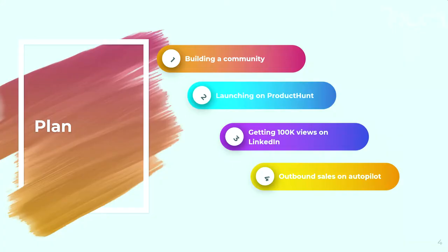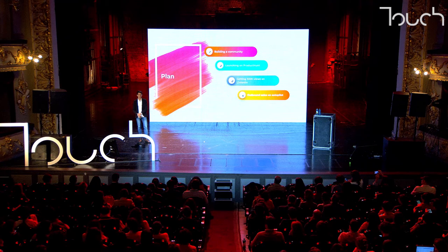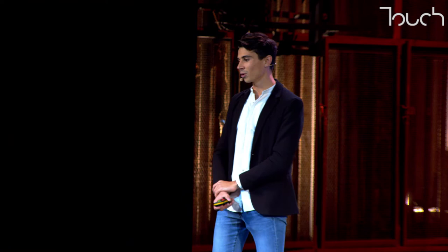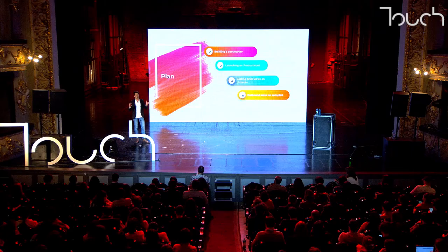In this presentation, I'm going to share some tips. The first thing is why you should start building a community very early. We'll also discuss why launching on Product Hunt when you have a tech product is really important to go on a global scale. Finally, we'll discuss how you can get hundreds of thousands of views on LinkedIn without spending any money, and how to put your outbound sales process on autopilot.